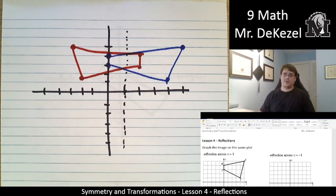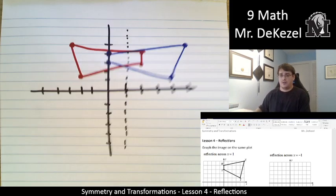So essentially, when we're flipping it over an x equals 1, we are just going how many to the right is it? Well, that's going to now be that many to the left. Let's do the next problem.